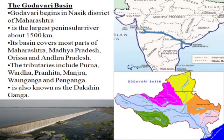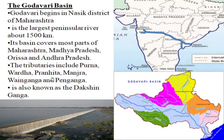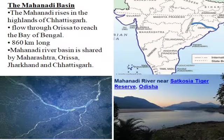Now we talk about Godavari. Godavari is one of the most important rivers — it is known as the Dakshin Ganga, the Ganga of South India, because it is the largest peninsular river with a length of 1500 km. It begins in Nashik district of Maharashtra at Trimbakeshwar plateau. Its basin covers most of Maharashtra, Madhya Pradesh, Odisha, and Andhra Pradesh. Tributaries include Purna, Wardha, Pranhita, Manjra, Wainganga, and Penganga. Famous projects include Pochampad, Jayakwadi, and Pulavaragu.